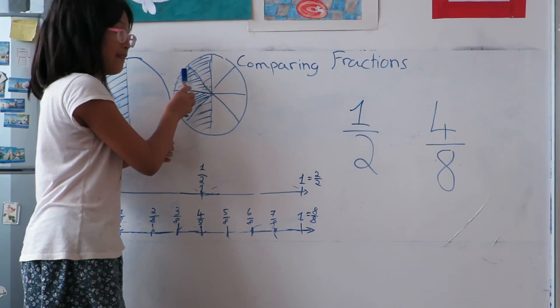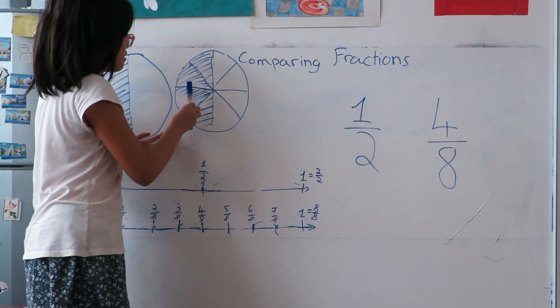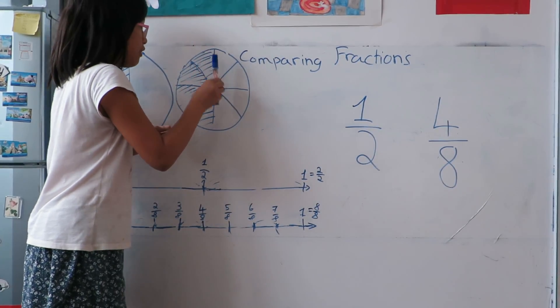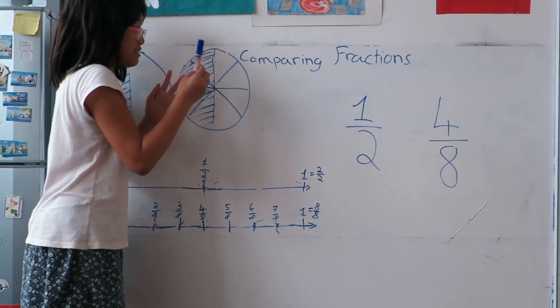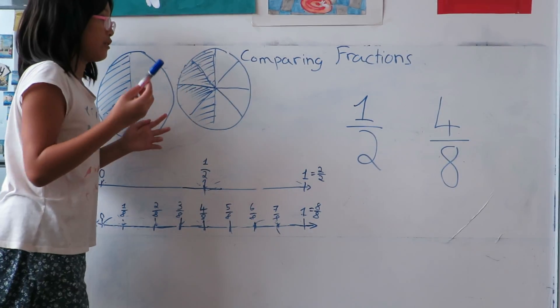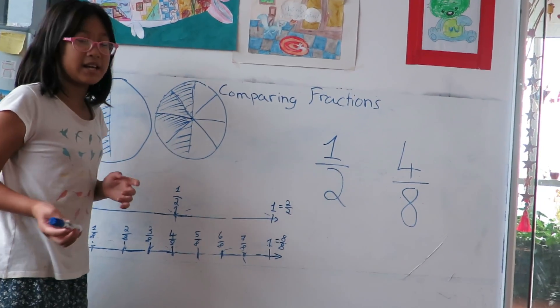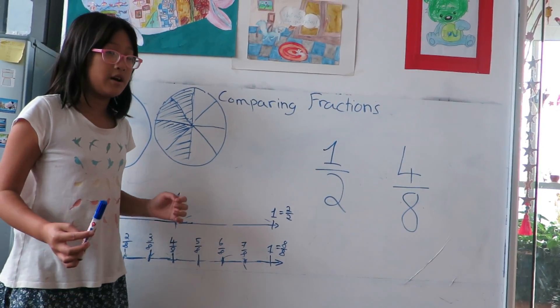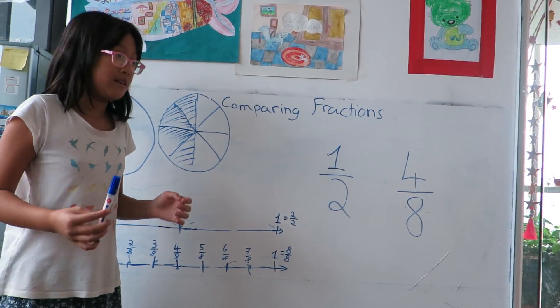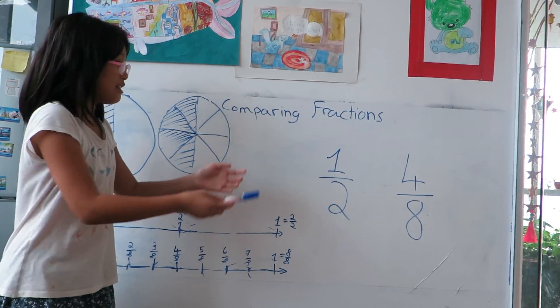And look, half of the cake is shaded while the other half is white. So four eighths and one half is equal to a half, and that means they are equivalent.